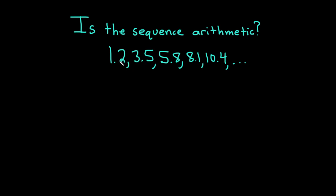So for example, we start with 1.2 and then how do we get to 3.5? Well, it looks like we would add 2.3. And if you add 2.3 to 3.5, you get 5.8. Do it again, you get 8.1. Do it again, you get 10.4.